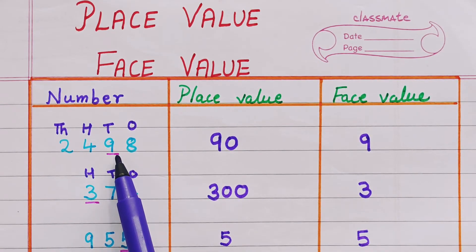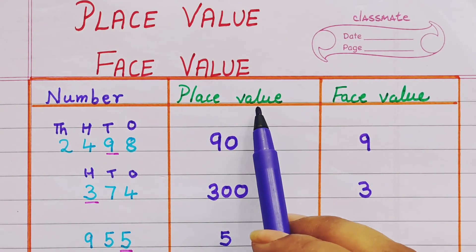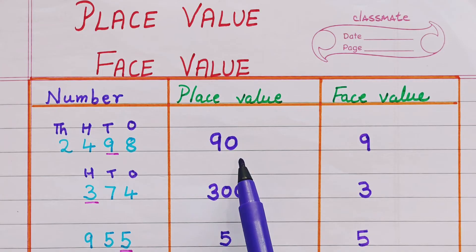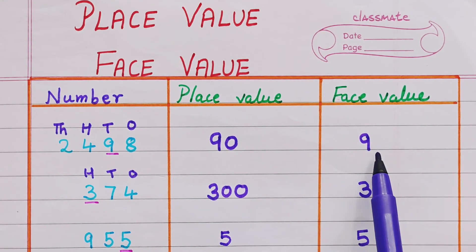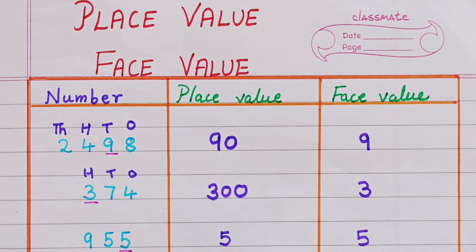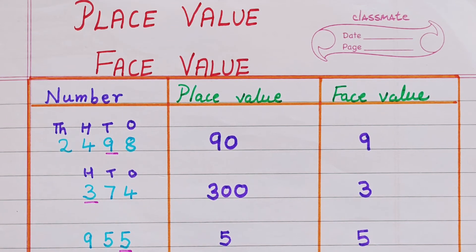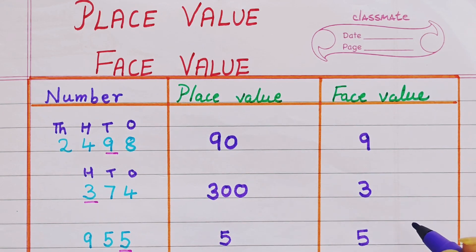I hope place value and face value are clear to you. First, give the numbers their places, then see which place the digit is in — according to that you can write the place value. The face value is very easy: it will be the number itself. Thank you everyone. If you have any doubts, you can write them in the comment section of any of my recent posts.